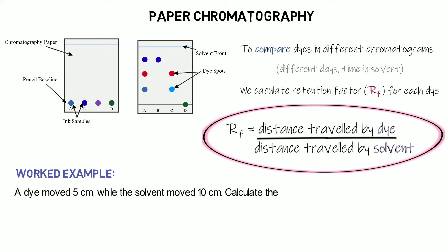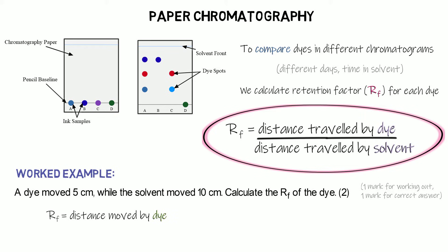Here's an example: a dye moved five centimetres while the solvent moved ten centimetres — calculate the RF value of the dye. This is a two-mark question, so you get one mark for your working and one for the correct answer. We use RF equals distance moved by dye divided by distance travelled by solvent.